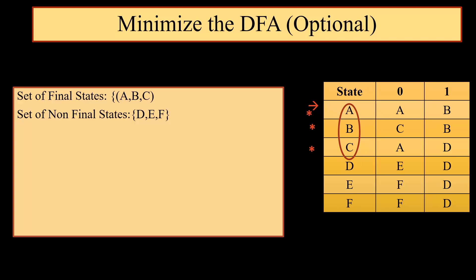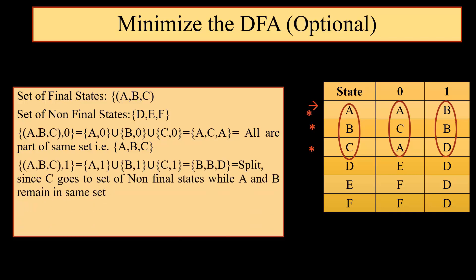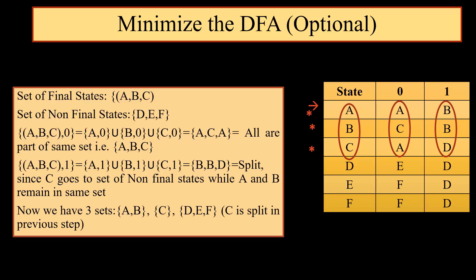We consider {A, B, C}, the set of final states, on input 0. We move to A, C, A — all three are part of the same set, so there is no split. When we consider {A, B, C} on input 1, we get B and D. Since D belongs to the set of non-final states whereas B belongs to the set of final states, we divide this into 2 parts: {A, B} and {C}. So C is split, and now we have 3 sets: {A, B}, {C}, and {D, E, F}.